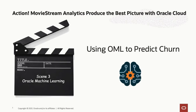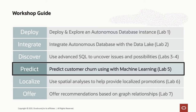Welcome to Scene 3: Oracle Machine Learning. In this lab, we're going to use Oracle Machine Learning and lots of its capabilities to predict customer churn. Depending on the work done on the previous labs, we're going to learn how to identify potential churners, so that we can use them for promotions and for the recommendations coming up on the next labs.